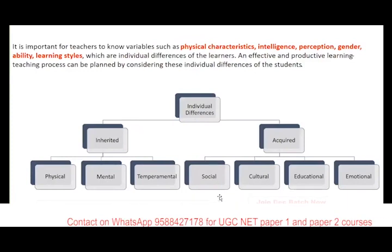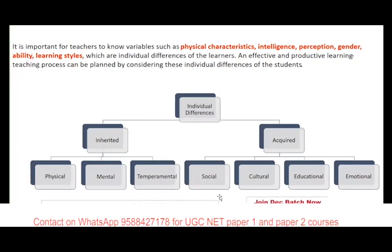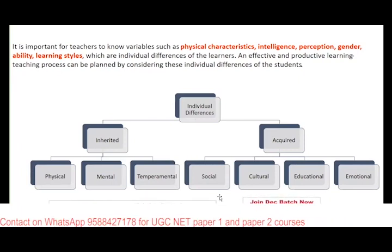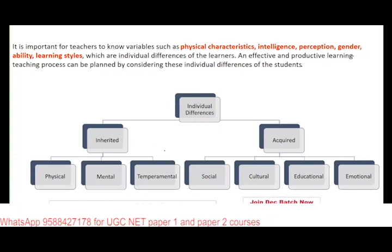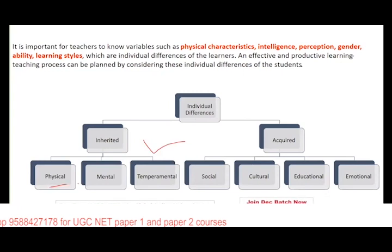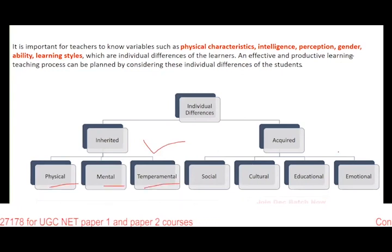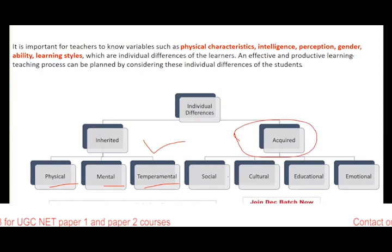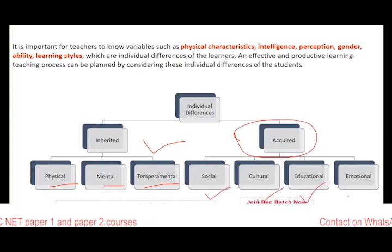The next topic is individual difference — there was a question that individual difference should be considered. Individual difference is based on what is inherited in the form of physical, mental, and temperamental characteristics, and what is acquired socially, culturally, emotionally, or through education.